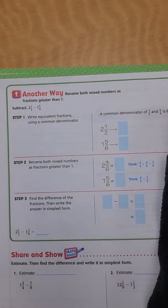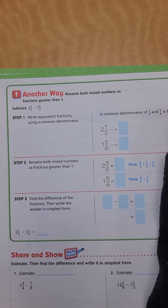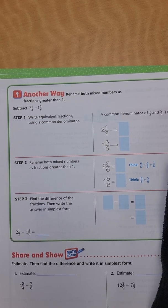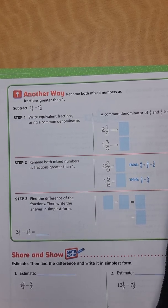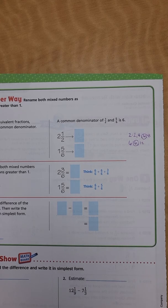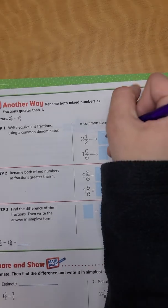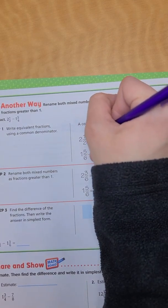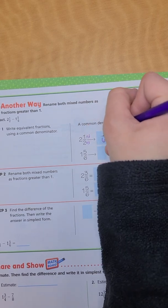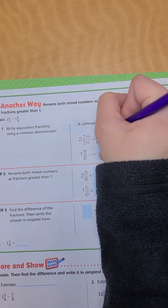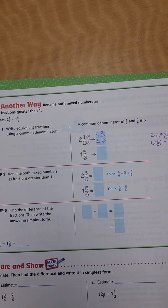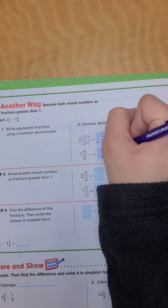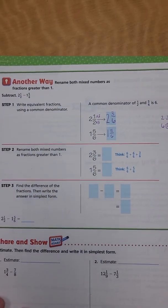If I list out my multiples of two and six — two, four, six, eight — and for six: six, twelve — I already know that six is a common multiple of both. So I'm going to use six as my denominator. Two times three gives me six, so one times three gives me three. For one and five-sixths, I don't have to change anything because it already has a denominator of six.